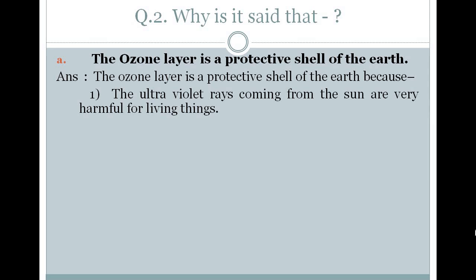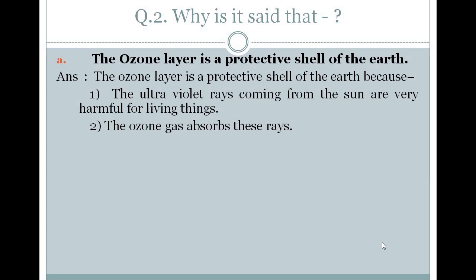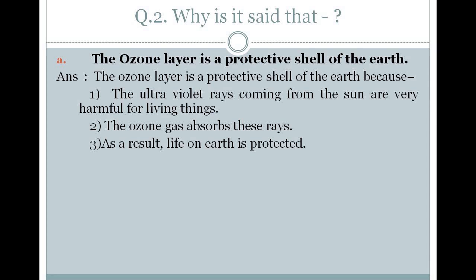These UV rays can cause skin cancer, skin diseases, redness, and patchiness on the skin. These UV rays are very dangerous, and they come from the sun. The ozone gas absorbs these UV rays, and as a result, life on the earth gets protected. Hence, the ozone layer is a protective shell of the earth.